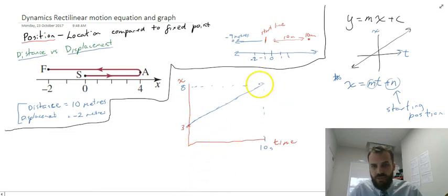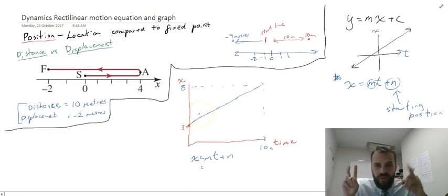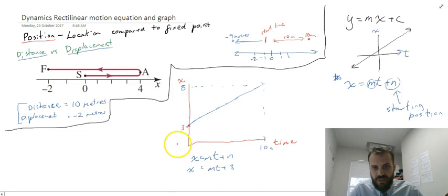Now in terms of the equation of that, you guys should be able to look at a line like that and create the function x equals mt plus n very, very simply. You'll know that the n is my xy intercept. So x equals mt plus 3. You also know that when t equals 10, x equals 8.